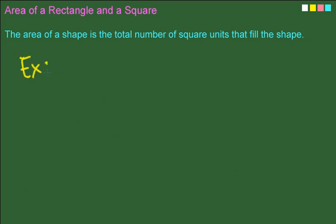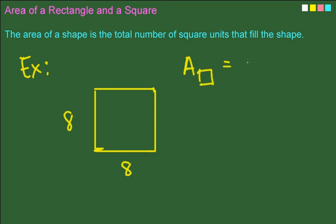Now let's take a look at an example of a square. Let's say it's 8 by 8. Tell me, what's the area of a square? Good. It's side times side, which is 8 times 8, and you get 64 square units.